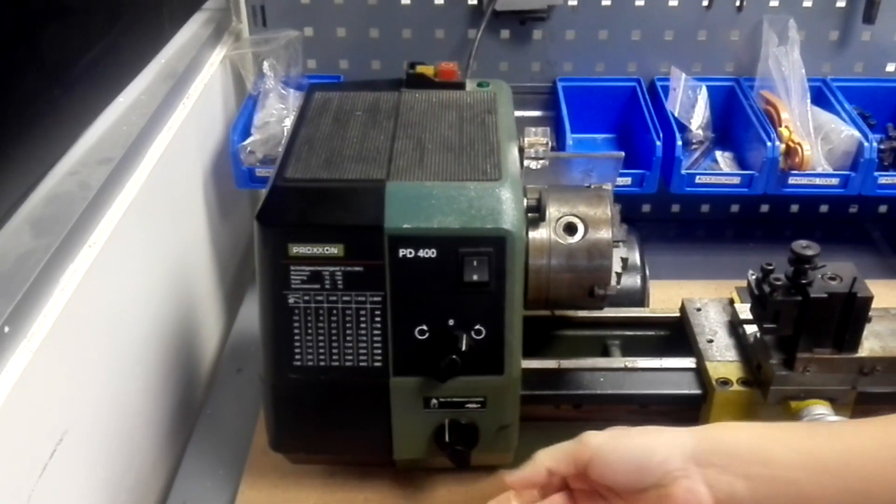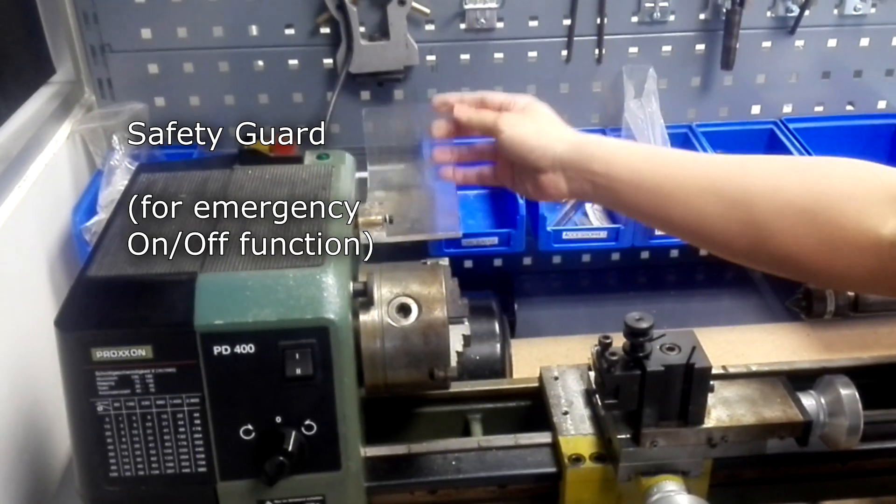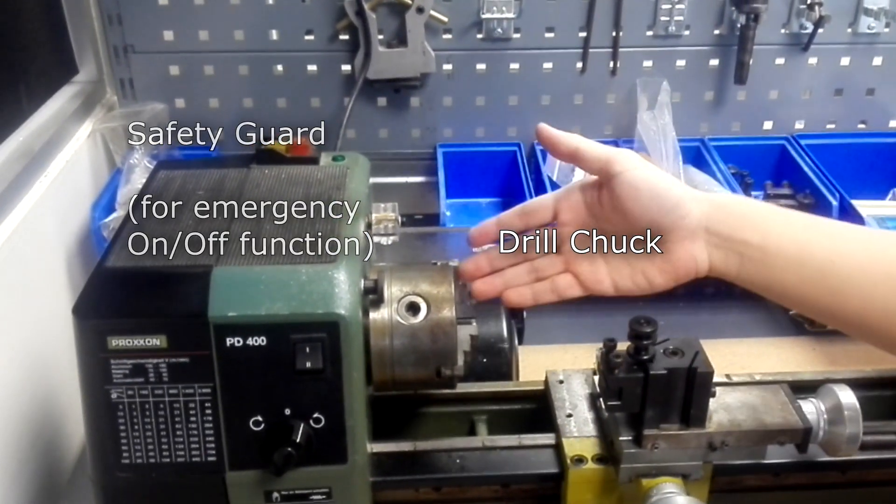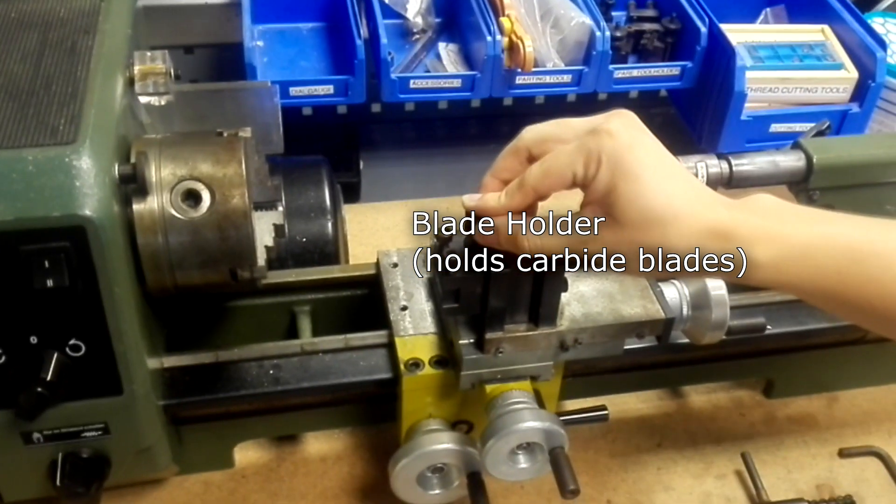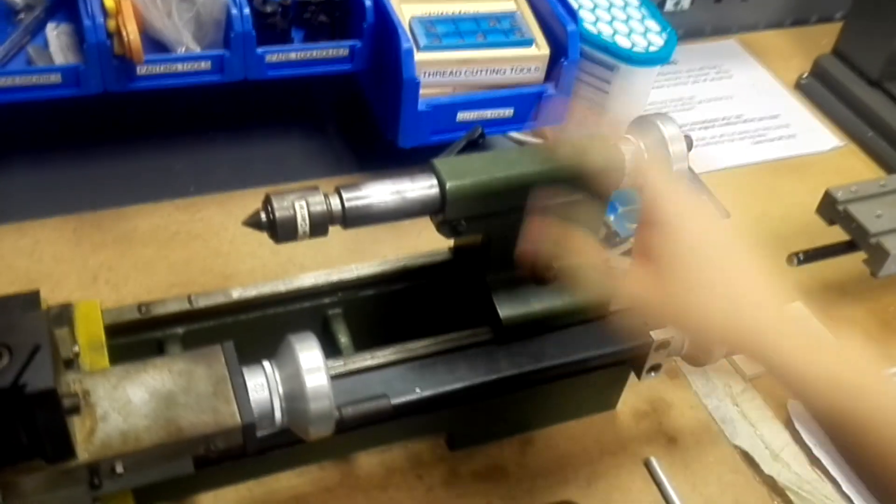Moving on, we have the safety guard, the chuck, the blade holder, the life center, and the tail stop.